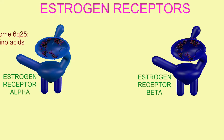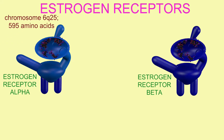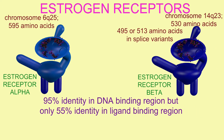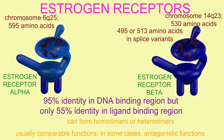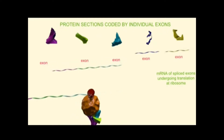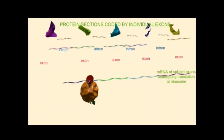The situation is a bit more complicated. There are two estrogen receptors: one encoded by chromosome 6, making a protein of 595 amino acids, and one encoded by chromosome 14, which can encode proteins that vary in size — 530 amino acids, 495, or 513, depending on how it's spliced.